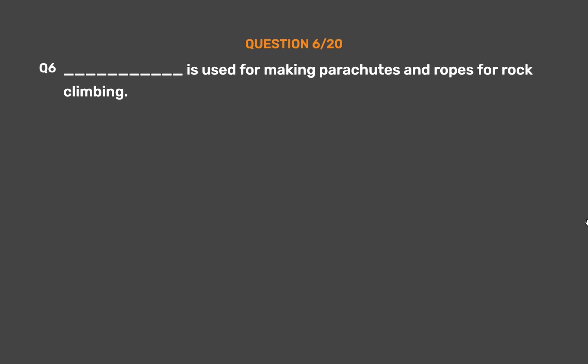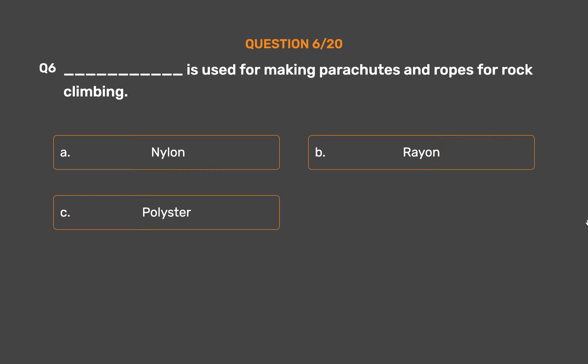Question Number 6. ___ is used for making parachutes and ropes for rock climbing. Option A: Nylon. Option B: Rayon. Option C: Polyester. Option D: None of these.